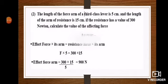Problem number two: the length of the force arm of a third class lever is 5, and the length of the arm of resistance is 15. If the resistance has a value of 300 Newtons, calculate the value of the affecting force. The effort force equals 300 times 15 divided by 5, which equals 900 Newtons.